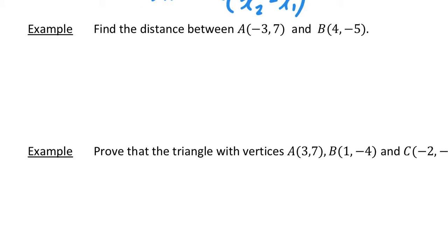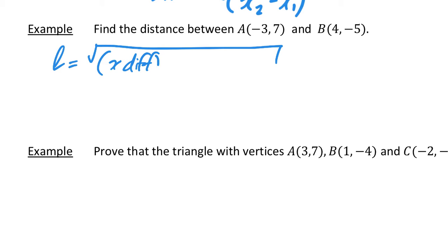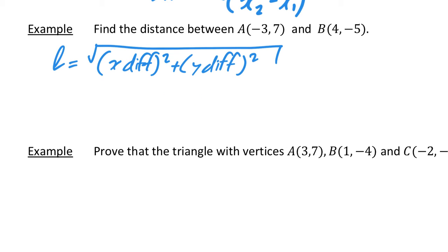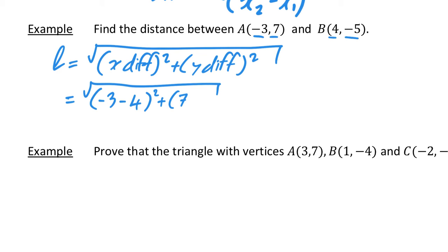This example says: find the distance between A, which is (-3, 7), and B, which is (4, -5). So L is equal to the square root of the x difference squared plus the y difference squared. That gives us the square root of (-3 minus 4) squared, plus (7 minus minus 5) squared, which is the square root of (-7) squared plus (12) squared.